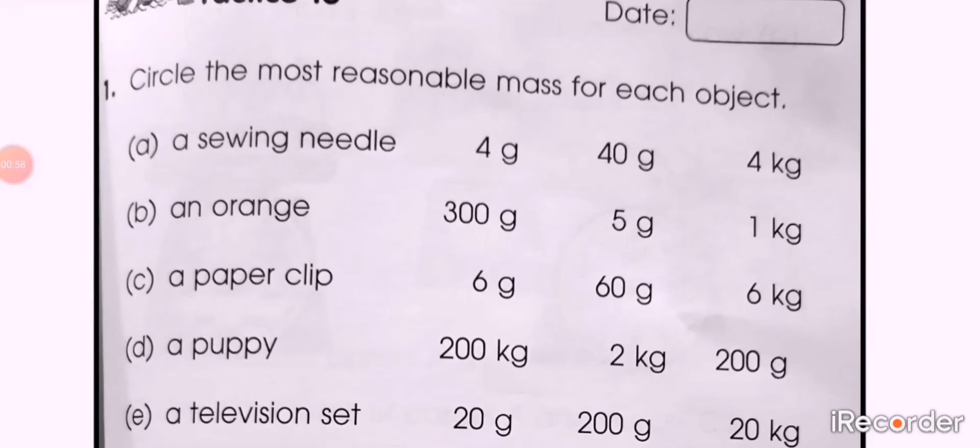Part A: a sewing needle, a little thing. Three options are here: 4 grams, 40 grams, and 4 kg. You will select the unit first. Is the mass of needle in grams or kilograms? And if it is in grams, you will choose one option from 4 grams or 40 grams and circle it.